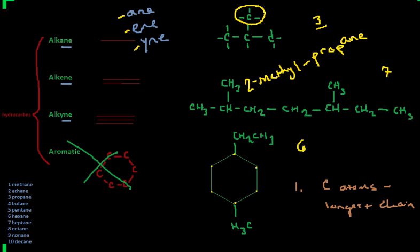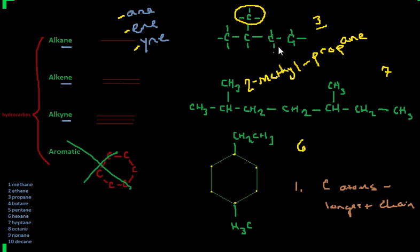Now, what I want to show you is — say for instance we had another carbon atom added — you need to always name it with the lowest number. It would still be 2-methyl. If you looked at it the other way and said three methyl, that would be incorrect, because you need to always find the lowest number that you can. That's a pretty general rule for a lot of stuff when you're naming — always try to use the lowest number. If you count the wrong way, it's really a different compound.